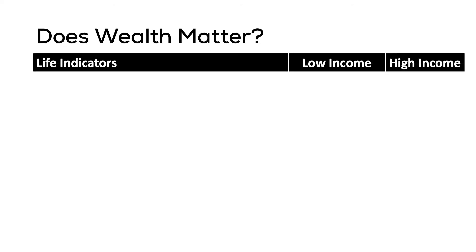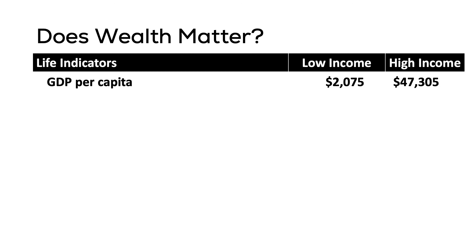Let us look at two categories of countries: the top 10 high-income economies and the 10 economies with the lowest income levels. Real GDP per capita for the low-income countries is roughly $2,000 per year, compared to $47,000 for wealthy nations. Based on real GDP per capita only, living standards in high-income countries are roughly 23 times higher.